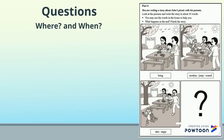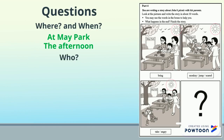Where and when? Where are they? At May Park. And when does the story happen? If you look at the pictures, you can see the sun shining, so that means it's the afternoon.